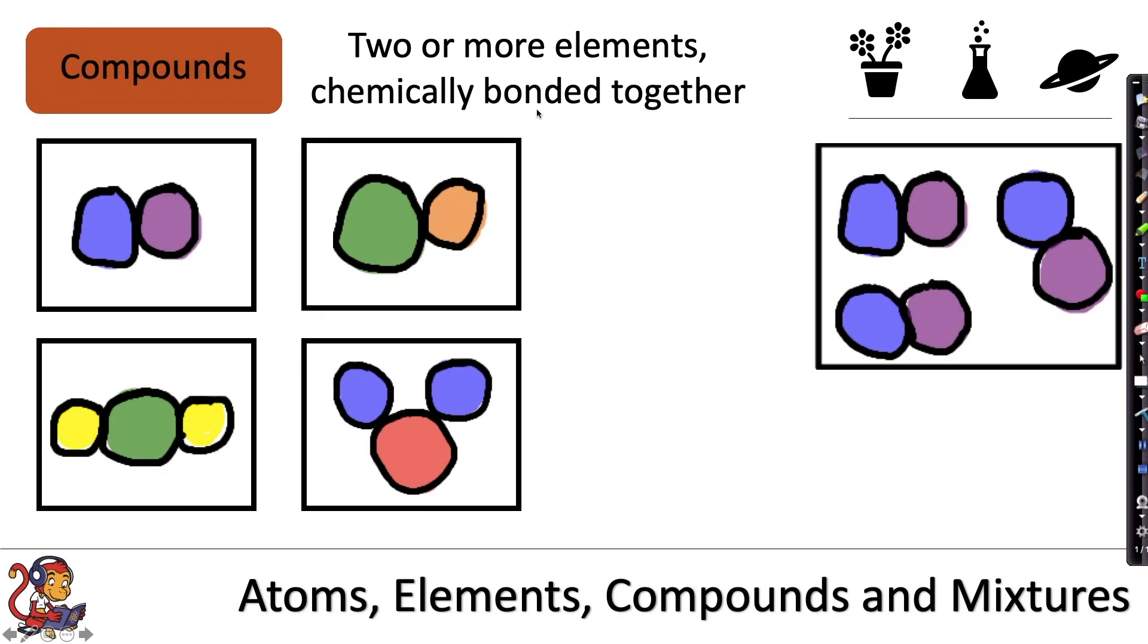If we were to draw a model to represent a compound, we'd need to show that it's made up of two or more elements and that they were chemically bonded together. So to recognize a compound you would look for two different colors or two different shapes used in the diagram and you'd look for them to be bonded together. So all of these examples are compounds. This is still a compound, it just has three different examples within the same box.